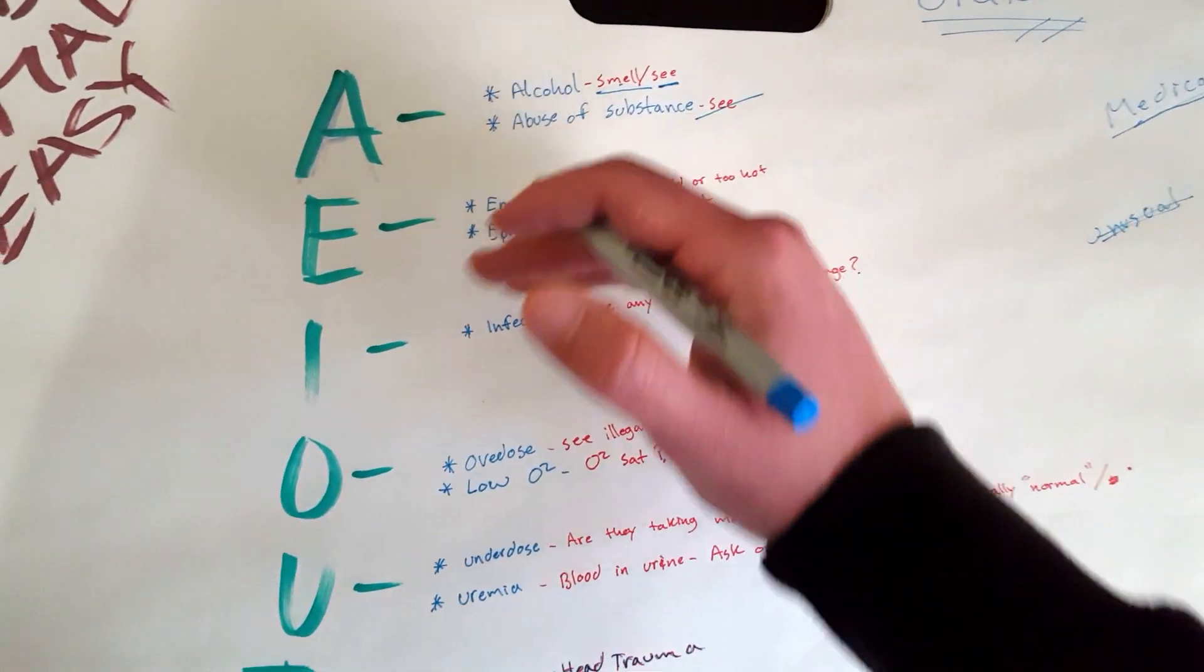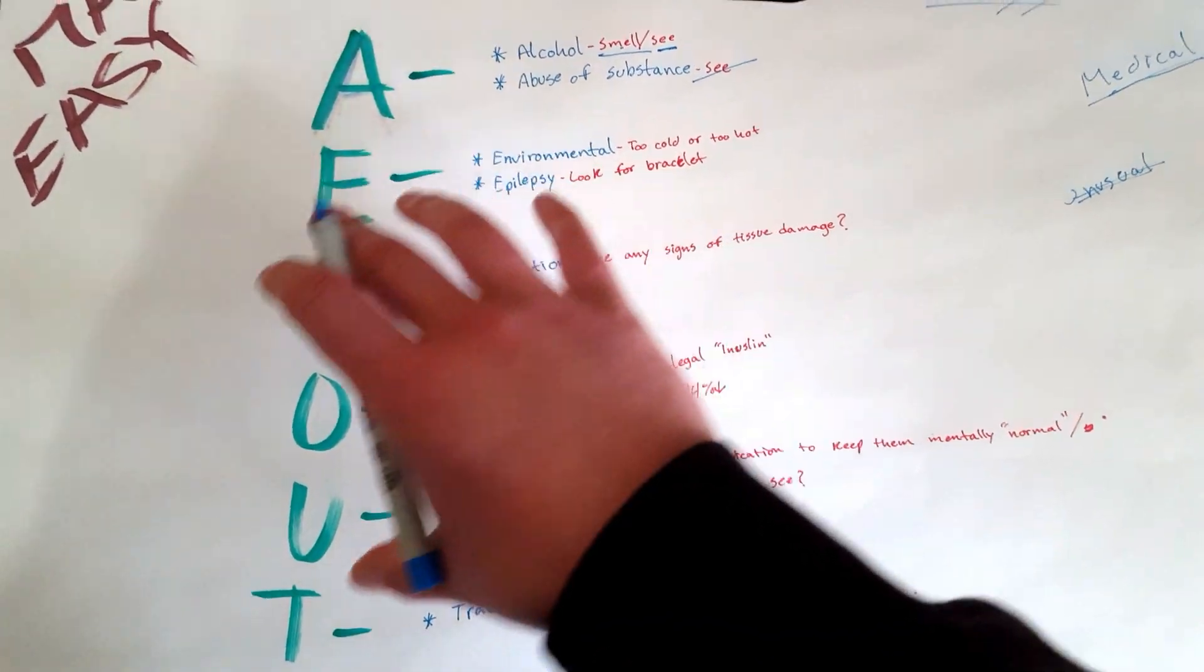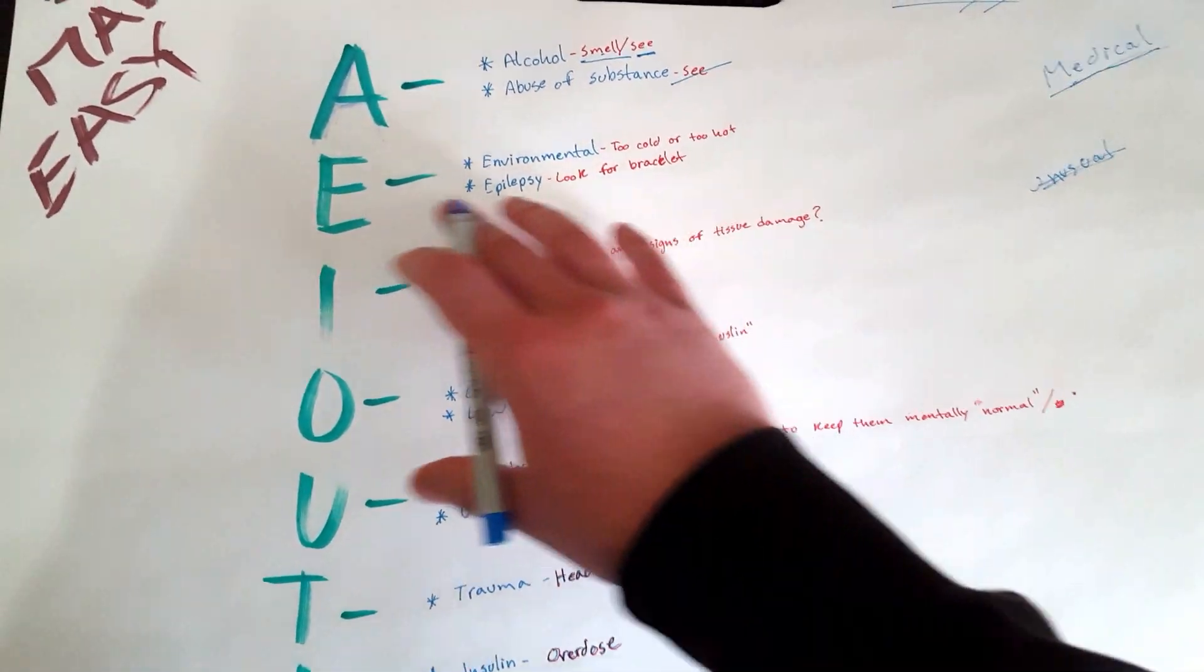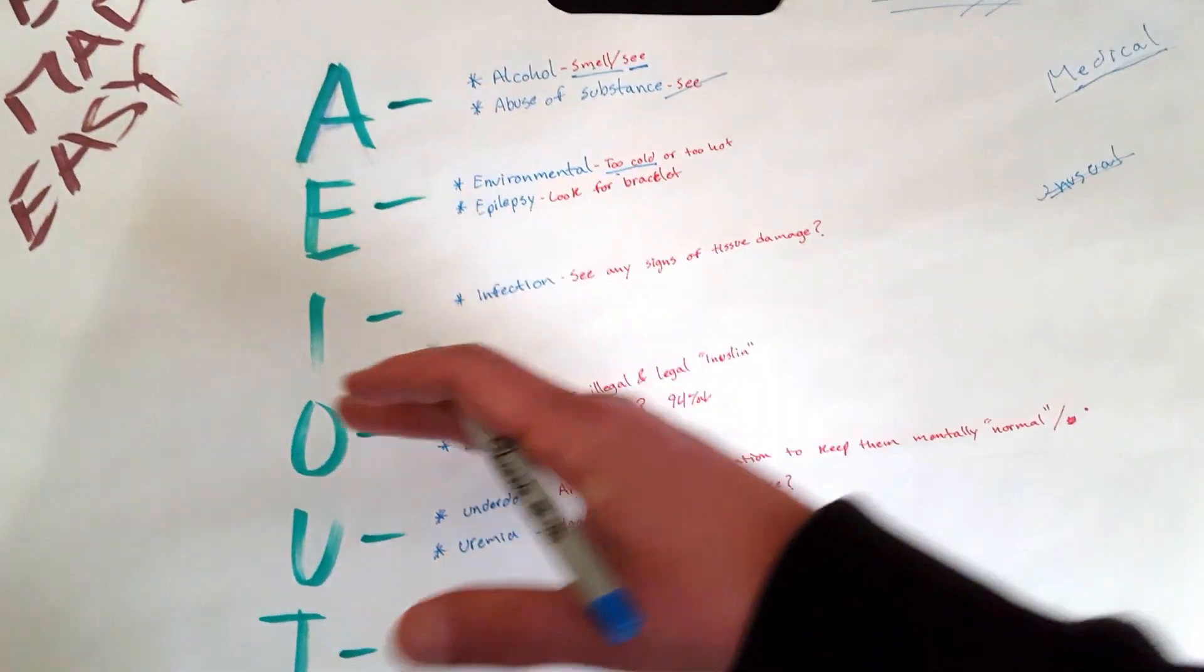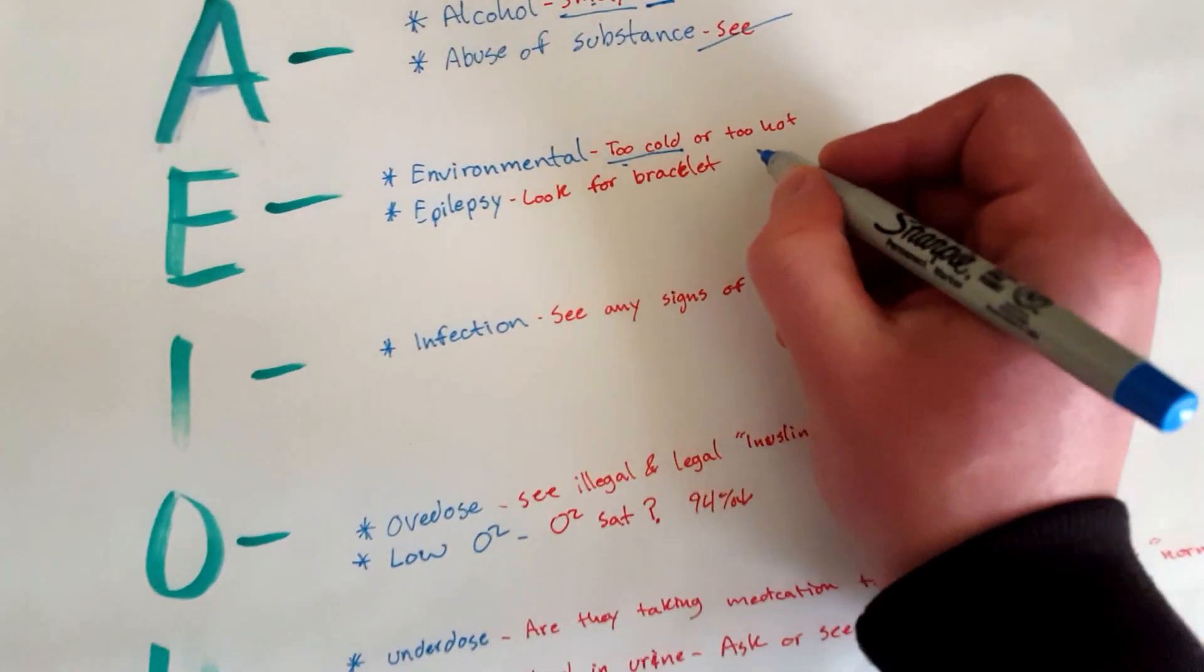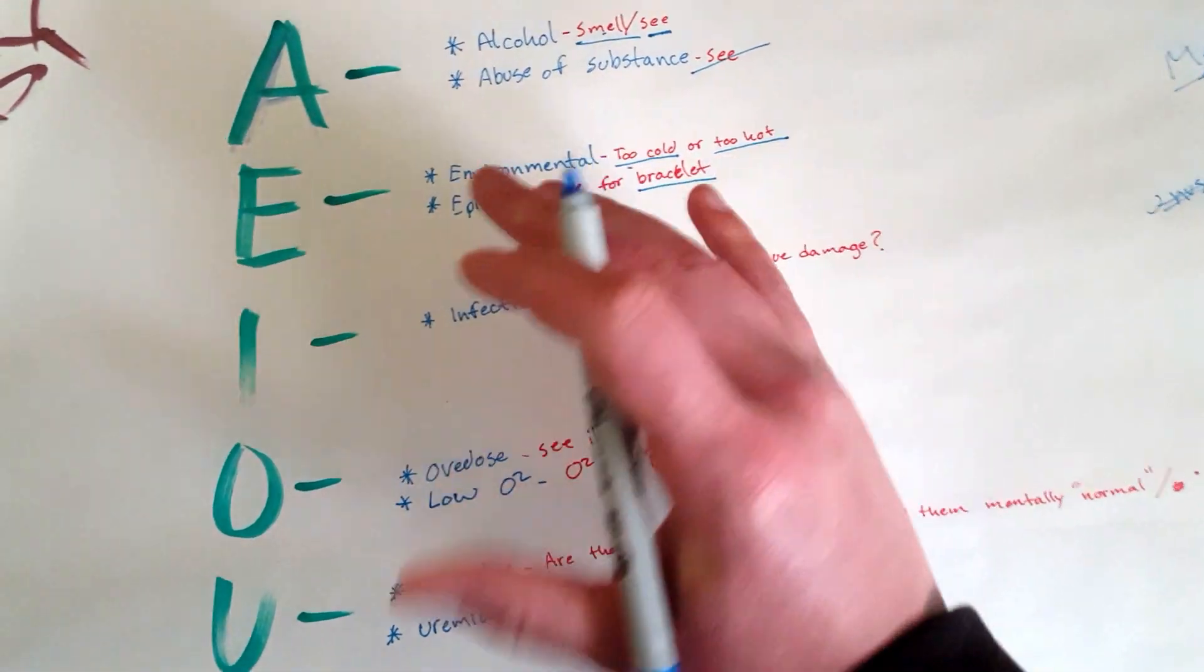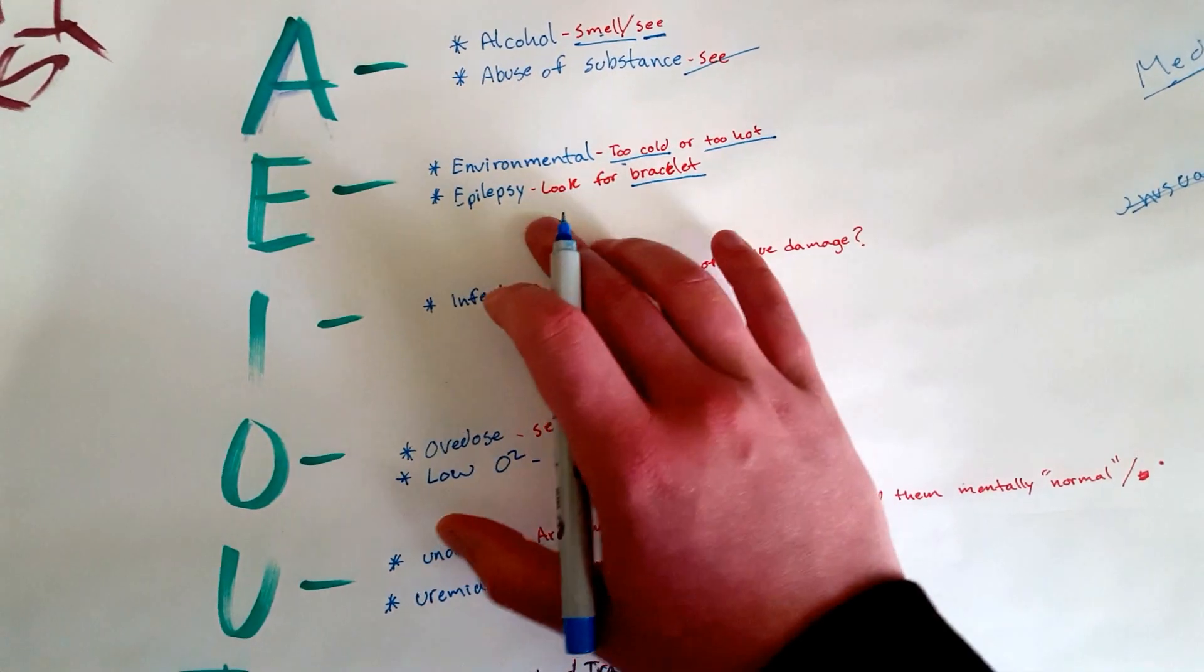You're going to keep on going down this list until you kind of hit what you're looking for, until you actually get to what is causing your patient to act irrational or be mentally altered. Then you get to E: Environmental. Is your patient in a really cold environment? Were they pulled out from a freezer? Were they stuck in a freezer for a few hours? Was it too hot? Maybe it's heat stroke, right? Also epilepsy: look for a bracelet. Patients sometimes will act irrational and combative after they just had a seizure.